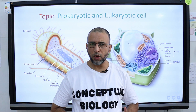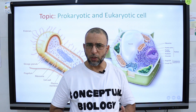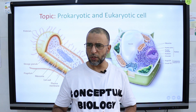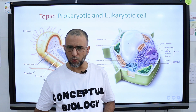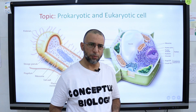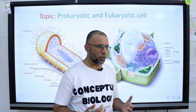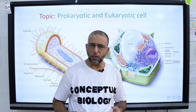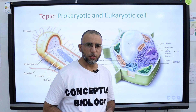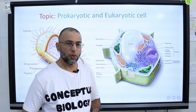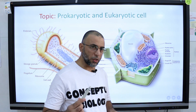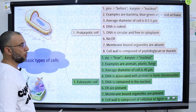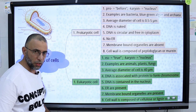All organisms are composed of cells. Some are composed of a single cell and are called unicellular organisms, while others like us are made up of many cells and are called multicellular organisms. There are two basic types of cells: prokaryotic cell and eukaryotic cell.